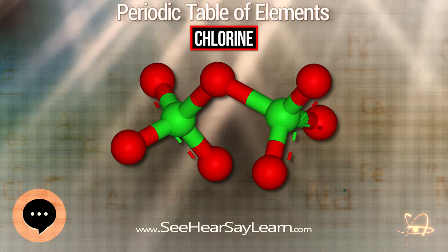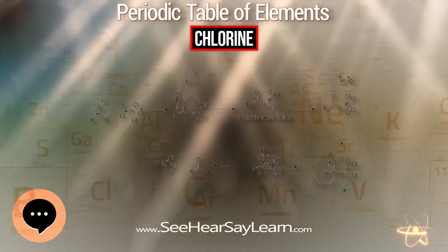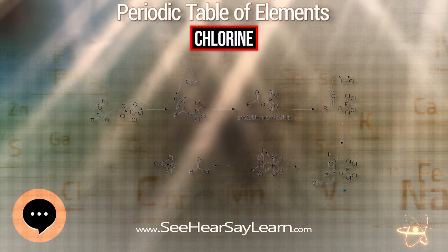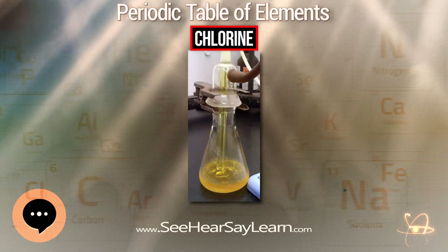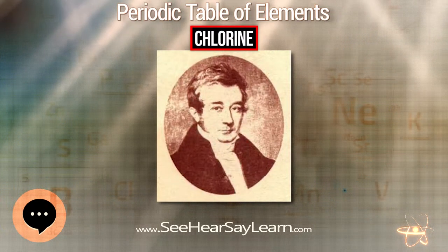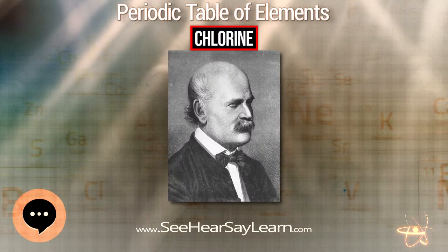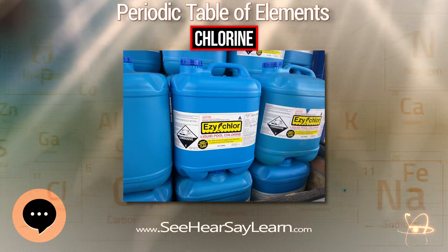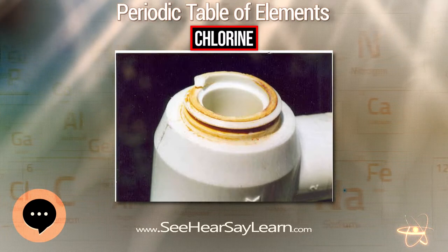They did not succeed and published a report considering the possibility that dephlogisticated muriatic acid air is an element, but were not convinced. In 1810, Sir Humphrey Davy tried the same experiment again and concluded that the substance was an element and not a compound. He announced his results to the Royal Society on November 15 of that year, naming the new element chlorine from the Greek word chloros, meaning green-yellow.